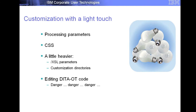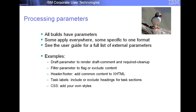Starting off with customizing with a light touch. A couple of ways you can do that: processing parameters — I'm betting most of you are already familiar with those — CSS, and then the danger zone. Processing parameters are pretty straightforward. Some of them apply everywhere, some are specific to a format. You can use filters to include or exclude content. Header and footer parameters apply to all the XHTML transforms. There's a parameter to turn on or off task labels, and a parameter to add your own CSS.